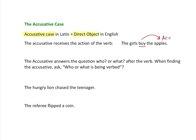The accusative answers the question 'who or what' after the verb. The easiest way to find the accusative is to ask who or what is being verbed. For example: 'The hungry lion chased the teenager' — the verb is 'chased,' so who or what is being chased? The teenager. And: 'The referee flipped a coin' — the coin gets the action, so the coin is the accusative.